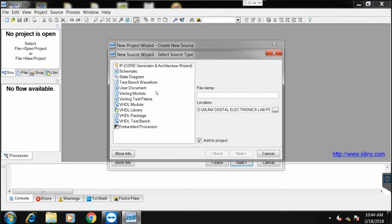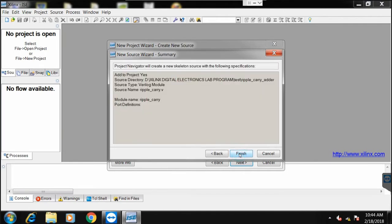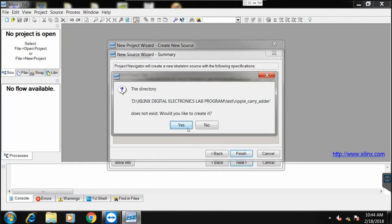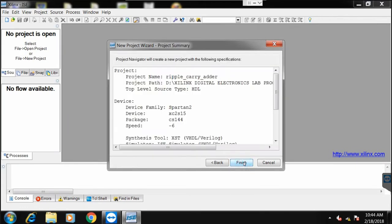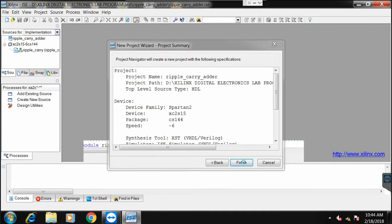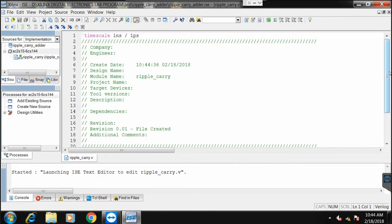Make the settings as shown in the video. Click on next, click on new source, click on Verilog module, write the file name for the module. I am writing ripple_carry. Don't write any report name here. Click on next, click on finish, click on yes. Again click on next, next, finish.